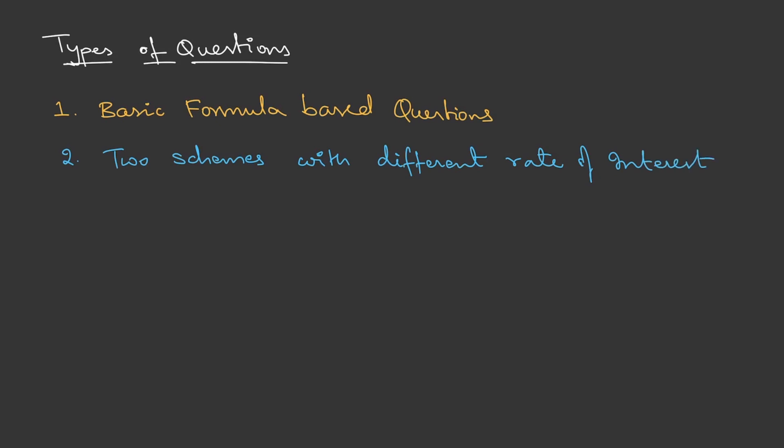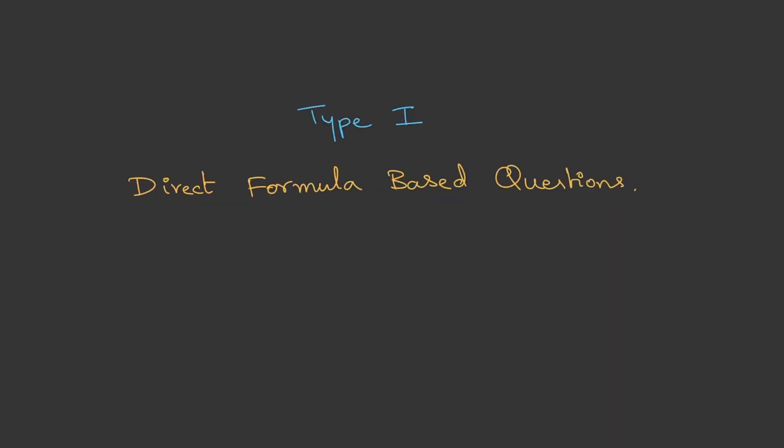The second one is two schemes with different rate of interest. The question comes with scheme A and scheme B, where A has some interest and B has some other interest. Third is different interest rates for different years. And the last one is a mixed bag or miscellaneous questions. Let us try out the first type, direct formula based questions.